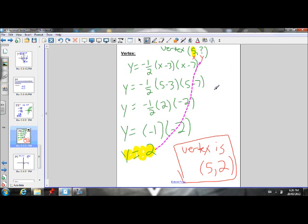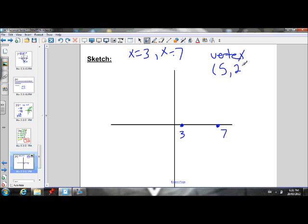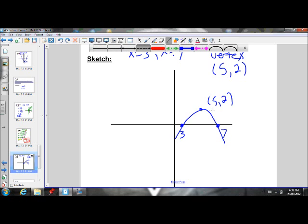And we solved that the vertex was at 5, 2. Plot that point. So 5 is halfway between 3 and 7, and then up to let's say that's 0.5, 2.